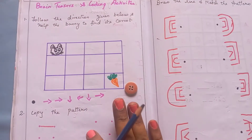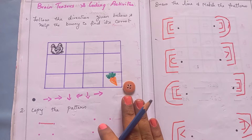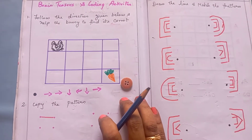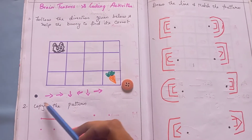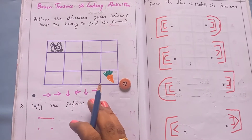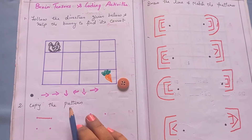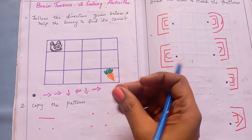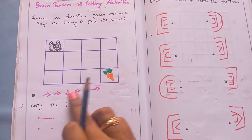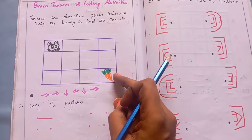Let's see the activities. The first worksheet is: follow the directions given below and help the bunny find its carrot. In this worksheet, the coding has a direction component. We will help the bunny reach the carrot by placing buttons along the correct direction path.